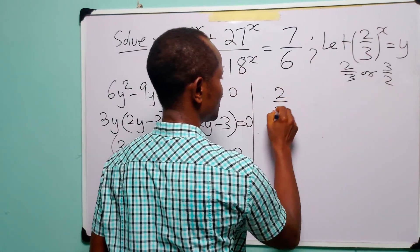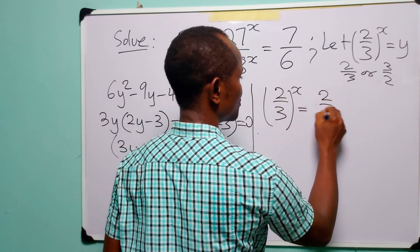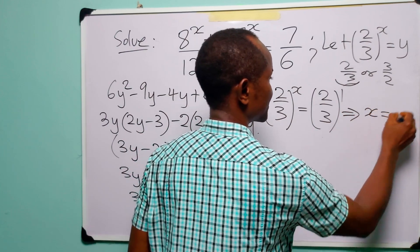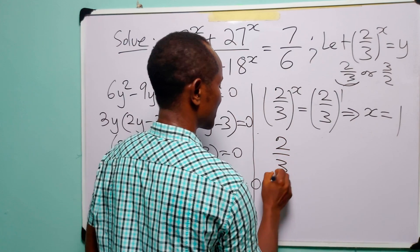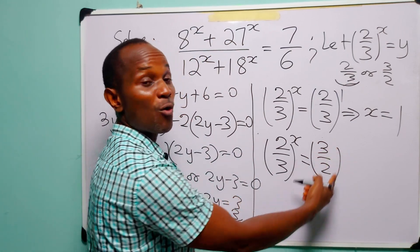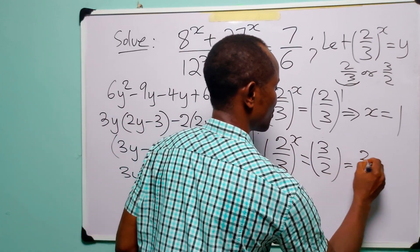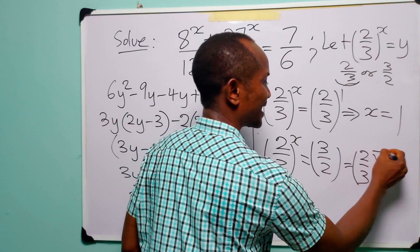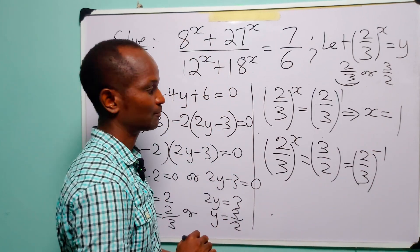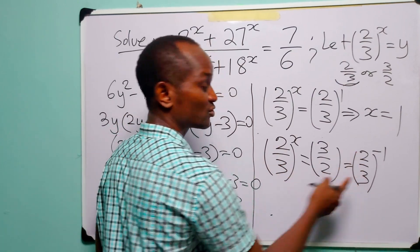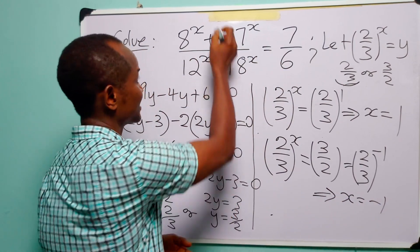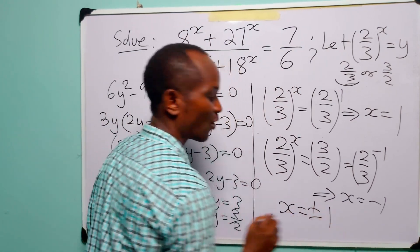Now we come back to our substitution. We have 2 over 3 to the power x equals 2 over 3, which is 2 over 3 to the power 1, so x equals 1. In the second case, 2 over 3 to the power x equals 3 over 2, which we can write as 2 over 3 to the power minus 1, since raising to the power minus 1 flips the fraction. So x equals minus 1. Therefore the two values of x that satisfy this equation are x equal to plus or minus 1.